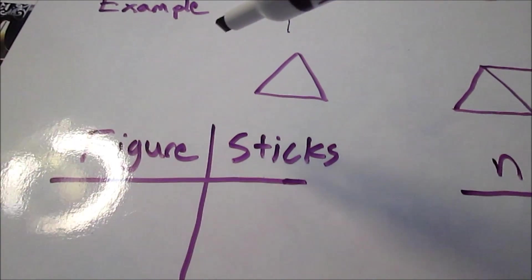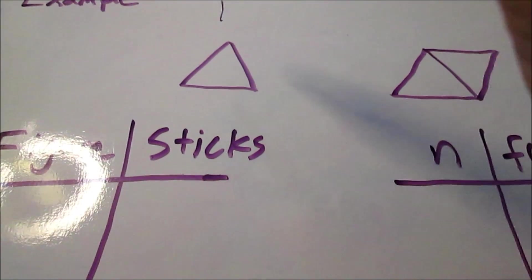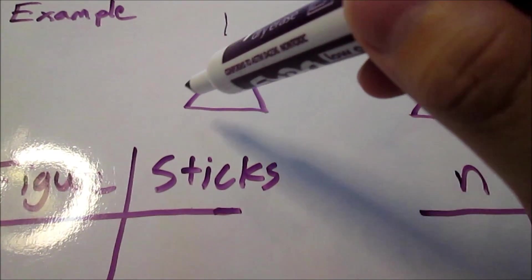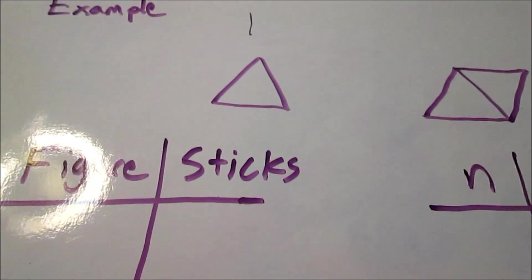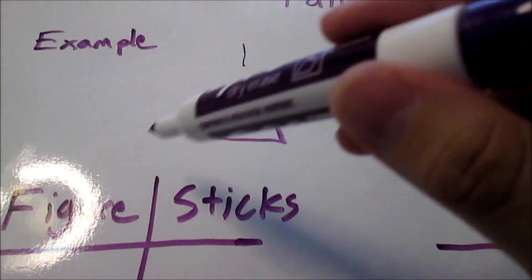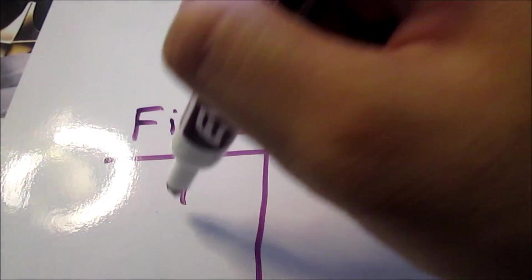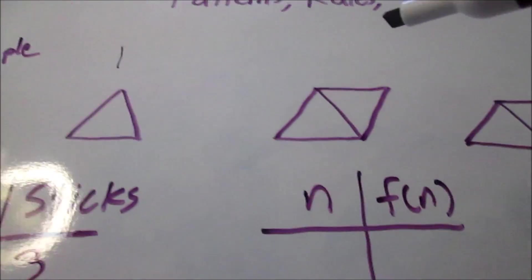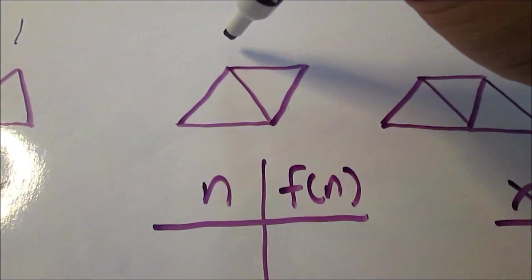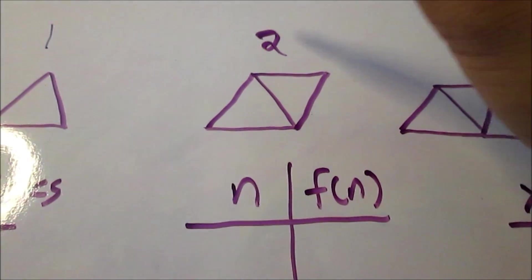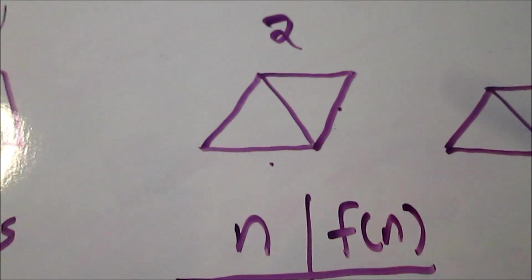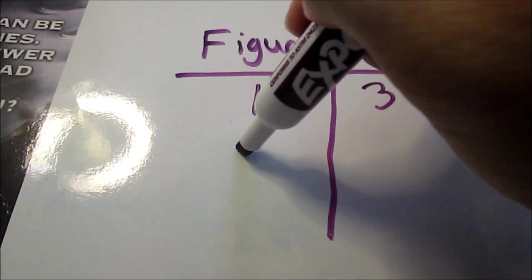I'm looking at the figure number, which is figure number 1, and I'm also looking at the number of sticks in that figure. I count 1, 2, 3 sticks. So I'm going to document that, in figure 1 there are 3 sticks. I do the same thing with the next one, so this is first, this is second, this must be figure number 2. I count the number of sticks, 1, 2, 3, 4, 5. Figure 2 has 5 sticks.